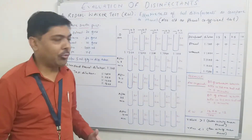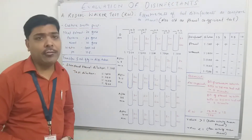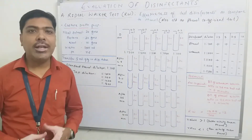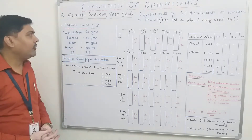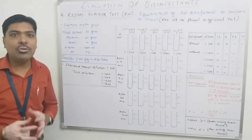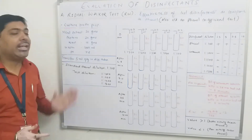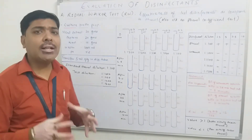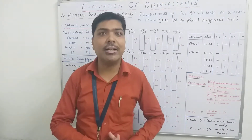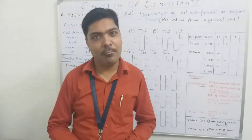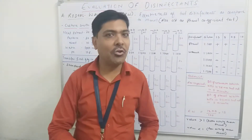Coming to the laboratory protocol for performing the Riddeal-Walker test. The first thing we have to do is preparation of the culture broth. We need to weigh: meat extract 20 grams, peptone 20 grams, sodium chloride 10 grams, and water up to 1000 ml, then maintain the pH to 7.6. After preparation, we need to autoclave the culture broth. So step one is preparation and sterilization of the culture broth.